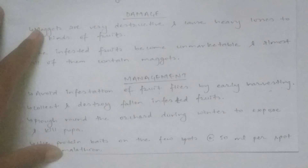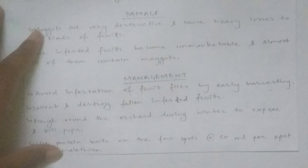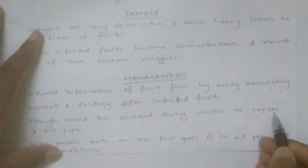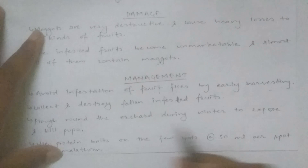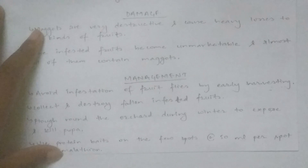Collect and destroy all fallen infested fruits, as maggots pupate in the soil. Plowing the orchard soil during winter exposes and kills the hibernating pupae.